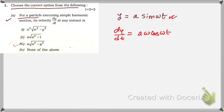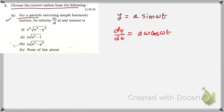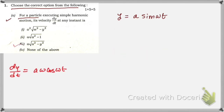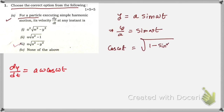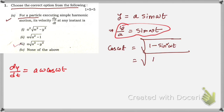From the first equation y = A sin(ωt), we can write cos(ωt) = √(1 − y²/A²). Here's how: y/A = sin(ωt), and we know cos(ωt) = √(1 − sin²(ωt)) by the trigonometric identity. Substituting sin(ωt) = y/A gives cos(ωt) = √(1 − y²/A²).